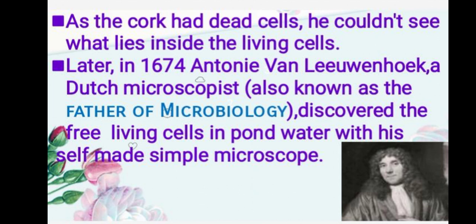Antony van Leeuwenhoek was a person who ground lenses and made microscopic observations as a hobby. He is said to have constructed almost 400 microscopes. Basically all his microscopes consisted of a single bi-convex lens, and that is why they were called simple microscopes.